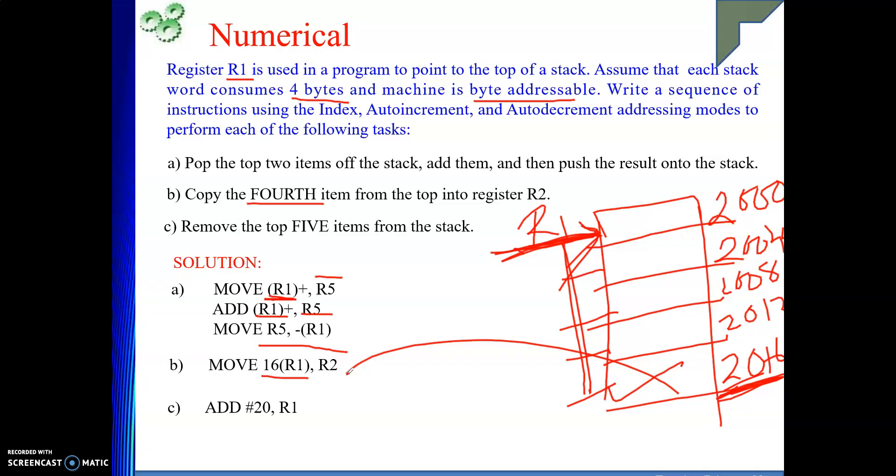Now, another one is given. That remove the top five items from the stack. Remove the top five items. So, 1, 2, 3, 4, 5. So, just now we have seen how to release stack space. See, suppose this five element space, I need to just release. I don't want to take the value somewhere. Just simply I want to release that space. Then what I can do? My R1 is at 2000. I need to take it to this position. Then all these element space will be released or those items will be removed from the stack. So, what I will do? Add 20, R1. Where from 20 is coming? Five element into size of each element. Five into four is 20. So, see, add 20, R1. So, this was an interesting numerical.